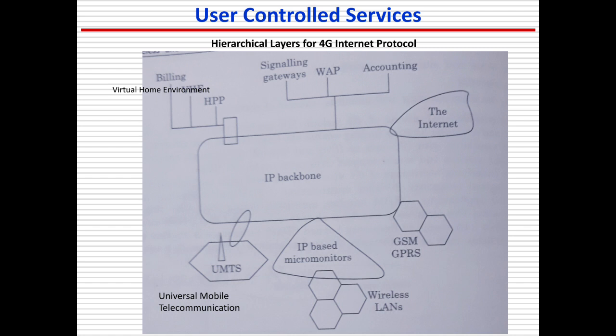The 4G internet protocol hierarchical layer includes VHE (Virtual Home Environment), signaling gateway, WLAN, internet, IP packet link, UMTS (Universal Mobile Telecommunications), IP-based monitoring, wireless LAN, GSM, GPRS, and mobile device. This is the overall hierarchical layer of 4G.